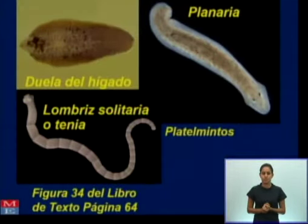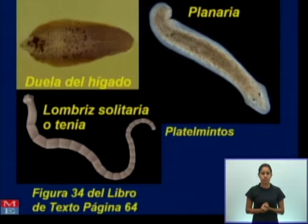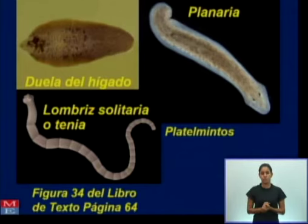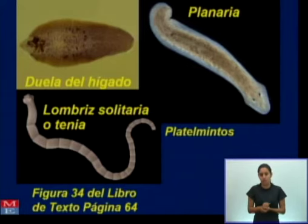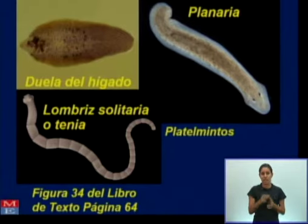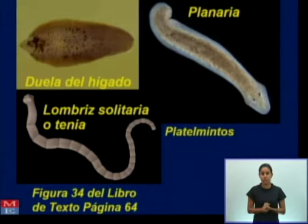Les presento ahora cuáles son los representantes que pertenecen a los platemintos. Aquí presentamos a la duela del hígado, también conocida como la fasciola hepática, la planaria, y la lombriz solitaria o tenia. Pueden ver en la figura 34 del libro de texto, en la página 64, estos representantes.